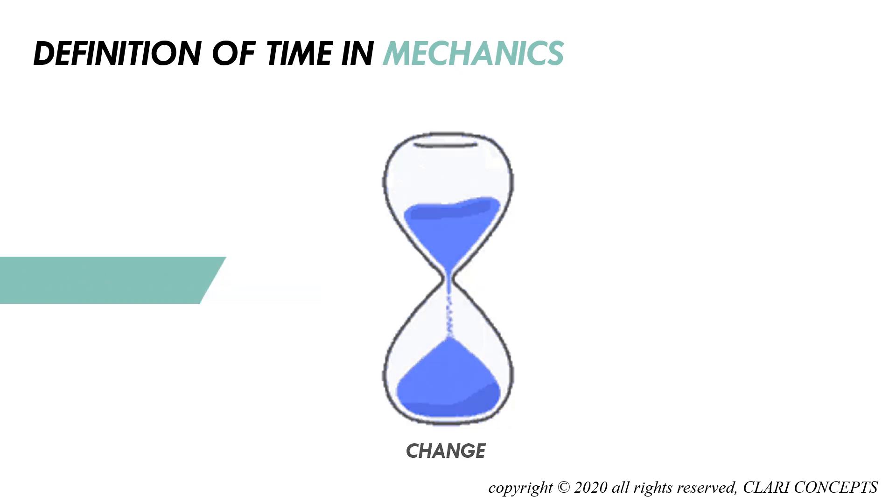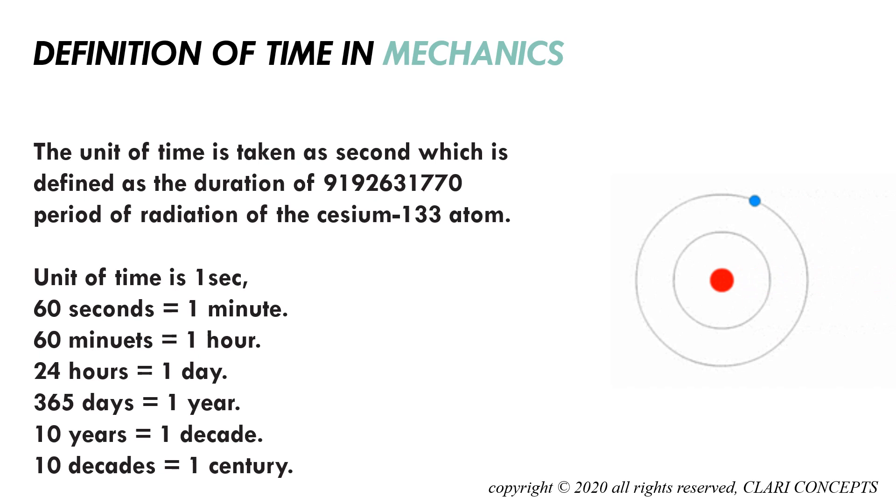Let me define time. The unit of time is taken as a second, which is defined as the duration of 9,192,631,770 periods of radiation of the cesium-133 atom. I know it sounds complicated, but let me make it easy for you. As you can see in the small video clip of an atom in the right corner of the video, the electron revolving around the nucleus will absorb radiation to get excited. Whereas cesium-133 is a nuclearly active atom.